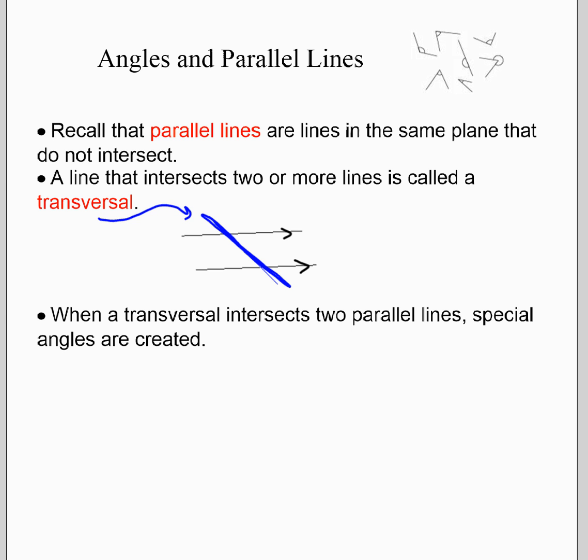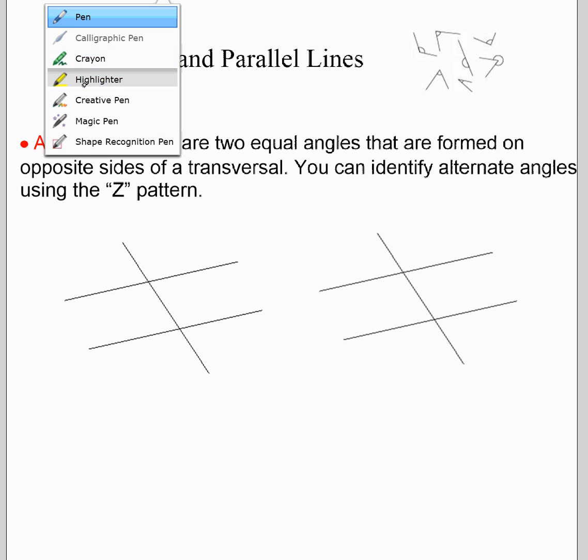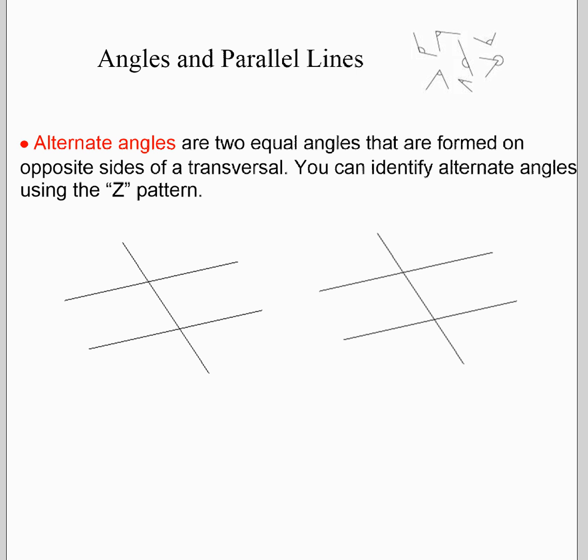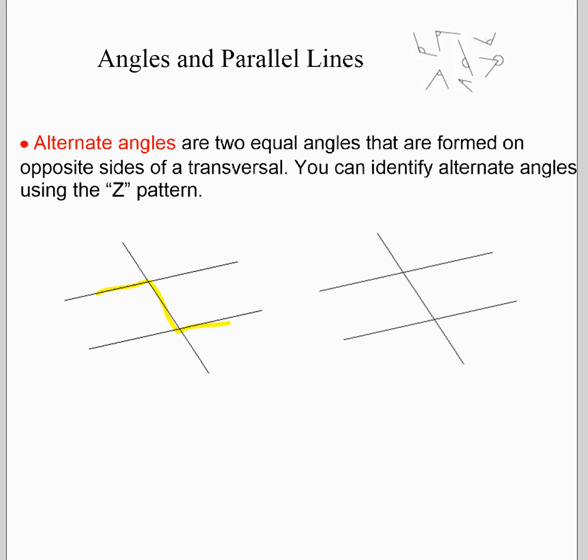So let's look at some of the special angles that are created. You learned about these in the investigations that you did. Alternate angles are two equal angles that are formed on opposite sides of the transversal. For example, I'm going to highlight right here, that highlighted area will help you to see two alternate angles.